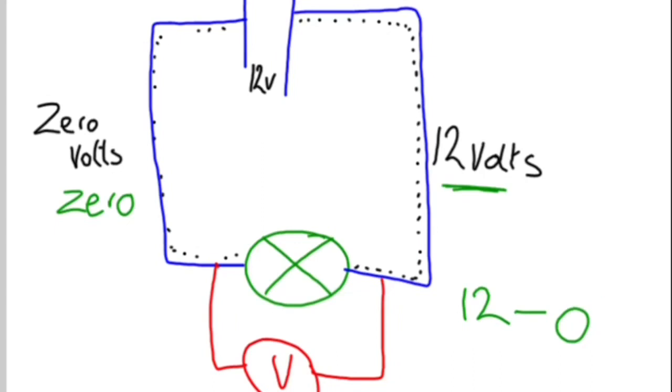So what shows on the voltmeter is the difference between the two. So, in this case, 12 minus zero is 12. So we see there is a voltage drop of 12 volts. It's dropped from 12 down to zero. Thanks for looking.